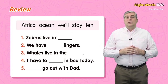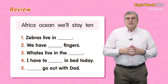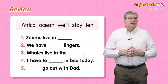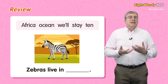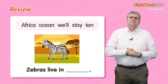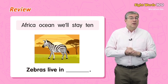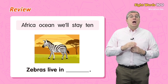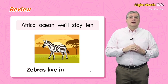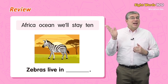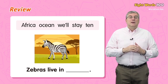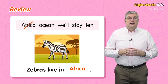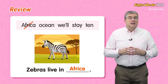Now it's time for review. Let's read some sentences, but words are missing. Can we think of the missing words? For example: zebras live in ___. Our study words are Africa, ocean, will, stay, and ten. Yes, we can use Africa — zebras live in Africa.